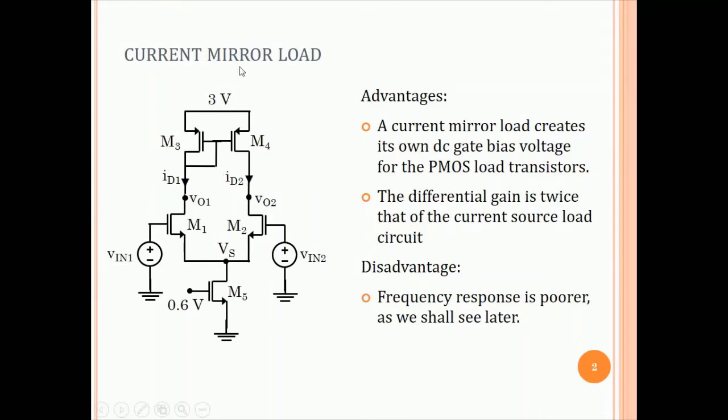The other advantage of the current mirror load is that the differential mode voltage gain of the circuit is twice that of the current source load as we will see. That by differential gain, I mean when the inputs applied are differential inputs, the output at VO2 is twice what the output was for the current source load. The disadvantage of this circuit is that its frequency response is poorer. That we shall see when we discuss the frequency response chapter which is chapter 6 that will start after this lecture.